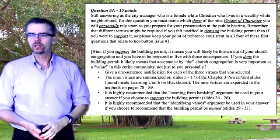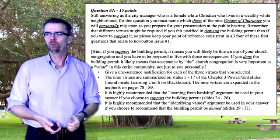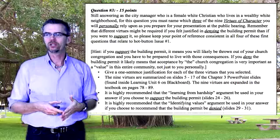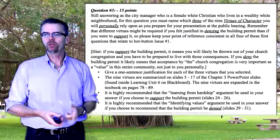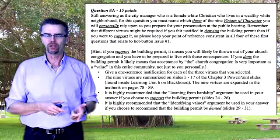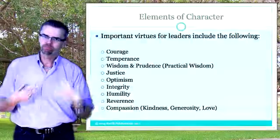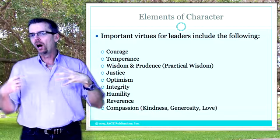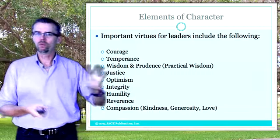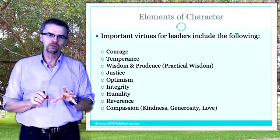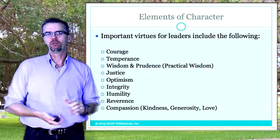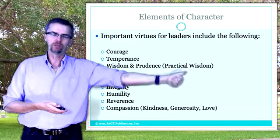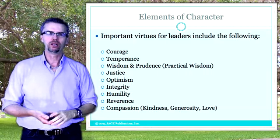Question three, 15 points. Still answering as the city manager — a white female Christian who lives in a wealthy white neighborhood — you must name which three of the nine virtues of character you will personally rely upon as you prepare for your presentation at the public hearing. Remember, the different virtues might be required if you felt justified in denying the building permit than if you were to support it. Certain virtues will reflect being connected to your community; others will reflect being a champion for the underdog. Tell me which three of the nine virtues you chose.